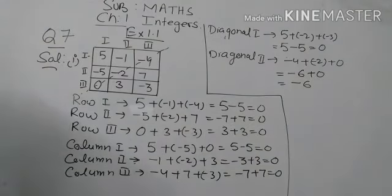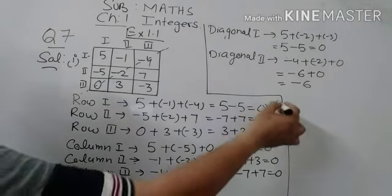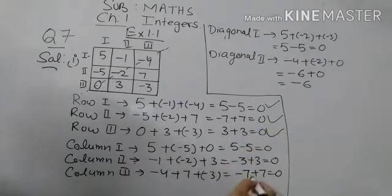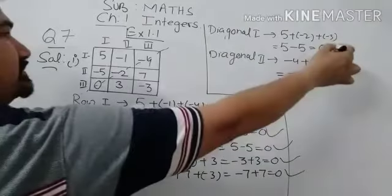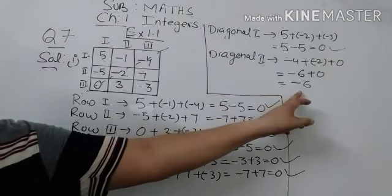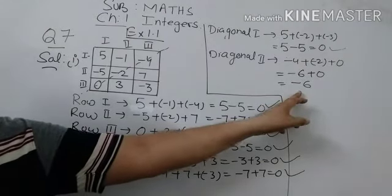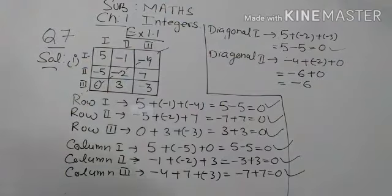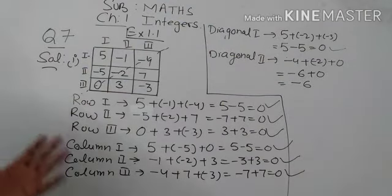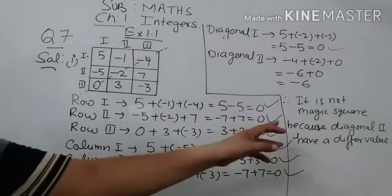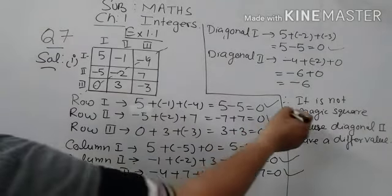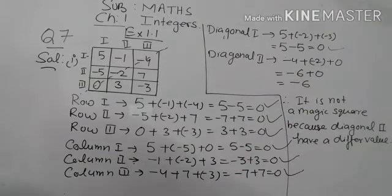Checking all values: row 1 is 0, row 2 is 0, row 3 is 0, column one is 0, column two is 0, column three is 0, and diagonal one is 0, but diagonal two is minus 6. So it is a different value. For a magic square, all values should be equal. Therefore, this square is not a magic square, because diagonal two has a different value. That concludes part one of question number 7.